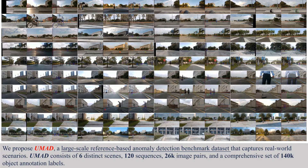We propose UMAD, a large-scale reference-based anomaly detection benchmark dataset that captures real-world scenarios. UMAD consists of six distinct scenes, 120 sequences, 26K image pairs, and a comprehensive set of 140K object annotation labels.